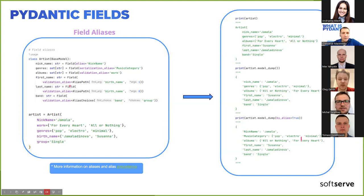We also have 'validation_alias' with AliasPath — for example, a first name and last name for an artist that need to be filled from a 'birth_name' variable. The first name is the second element and the last name is the first element of the iterable. Pydantic works out the correct mapping using the alias path and converts accordingly.